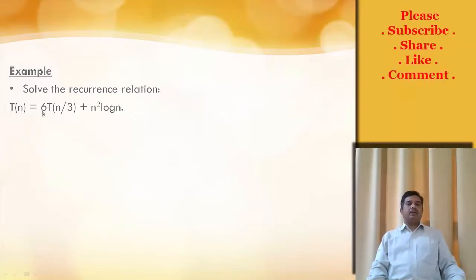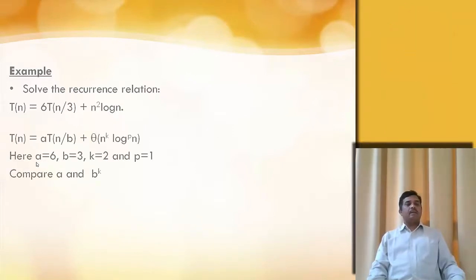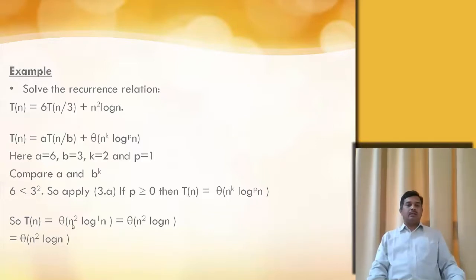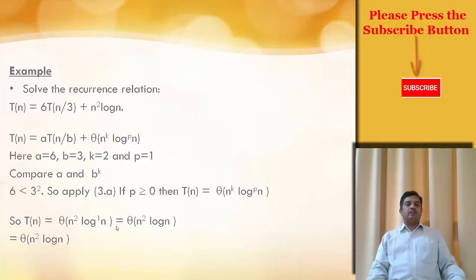T(n) = 6T(n/3) + n² log(n). Comparing a and b^k: a = 6 and b^k = 3² = 9, so 6 is less than 3². Apply formula 3a because p ≥ 0. Then T(n) = Θ(n^k · log^p(n)). So T(n) becomes Θ(n² · log^1(n)), which is Θ(n² log n).